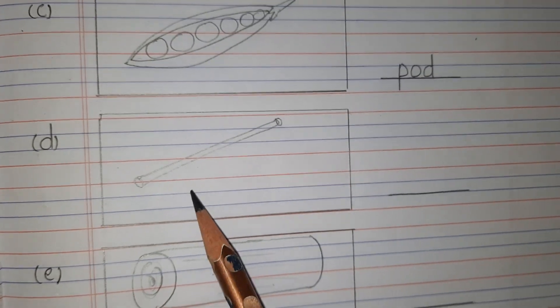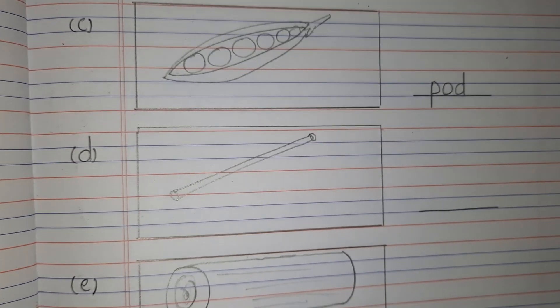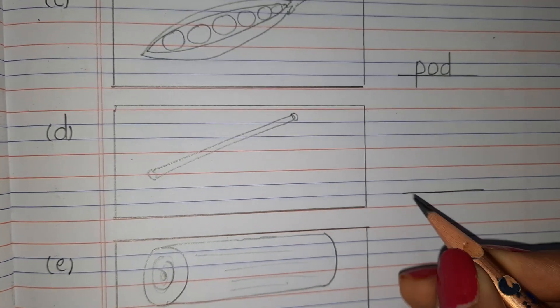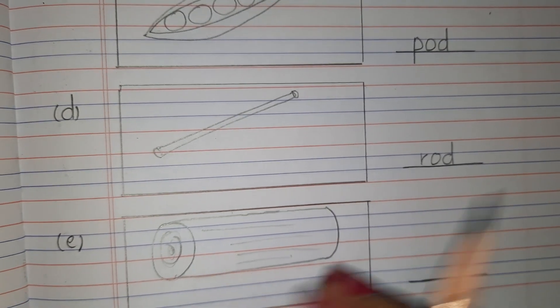Next, what is this? This is there and the curtain is also there on this. This is a rod. So how will you write rod? R, O, D, rod.